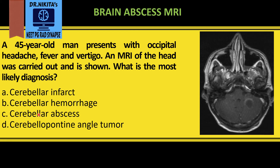On this contrast-enhanced MRI, the lesion is showing ring enhancement. A ring-enhancing lesion in the cerebellum — out of infarct, hemorrhage, and abscess — points to abscess. So the correct answer is option C, that is cerebellar abscess.